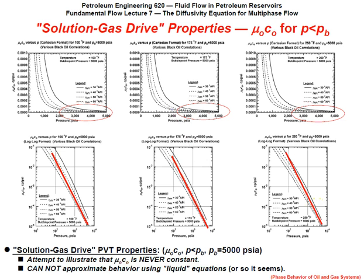Looking at the behavior of μO×CO: it appears constant when plotted on a linear scale, but when replotted on a log-log scale the slope is about 2. That's not constant — it's really bad. The oil case is actually worse than the gas case in terms of the behavior of μO×CO.